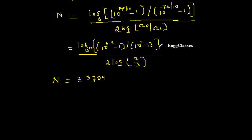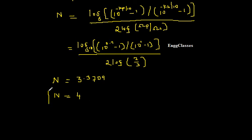We need to round off N to the next larger integer. N is 3.3709, so the next larger integer is 4. Be careful — we may not choose N equal to 3; we must round it up to the next larger integer. Therefore N becomes 4. This is the order of the filter.